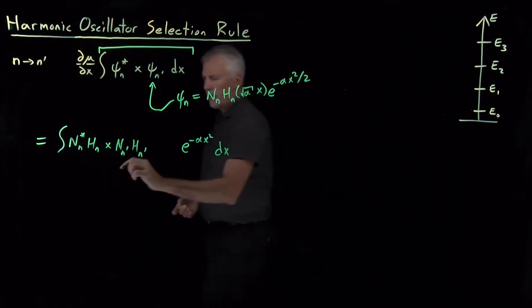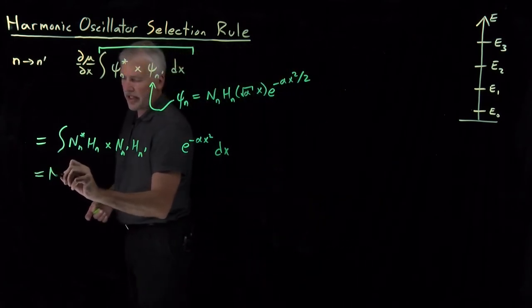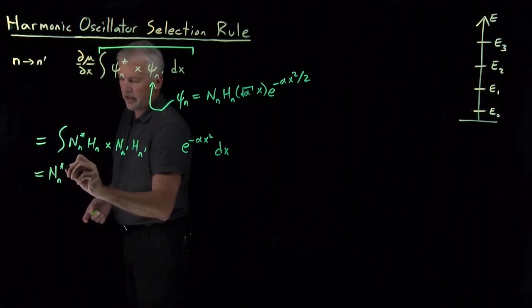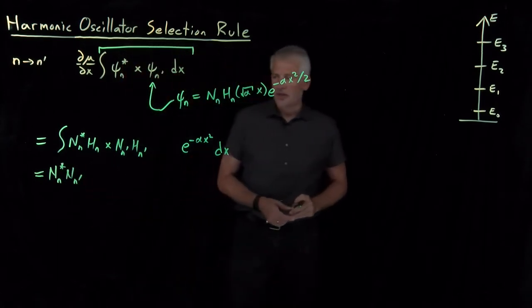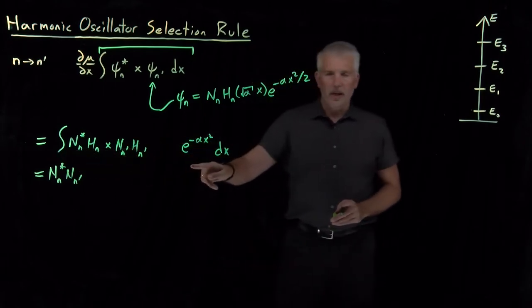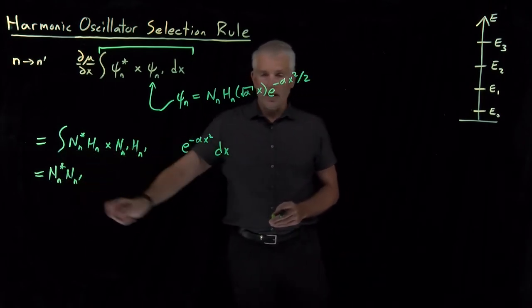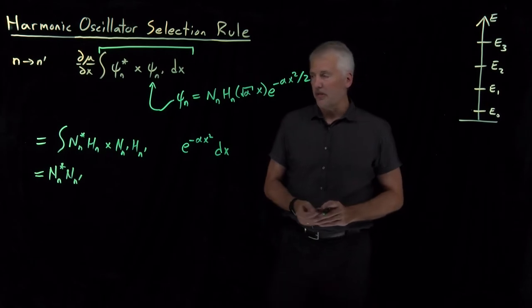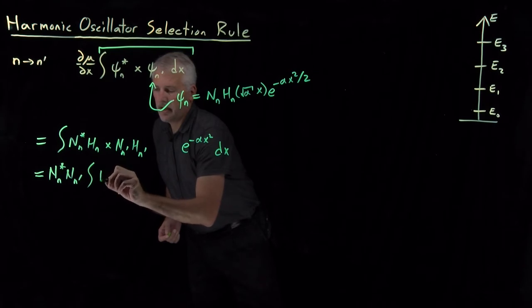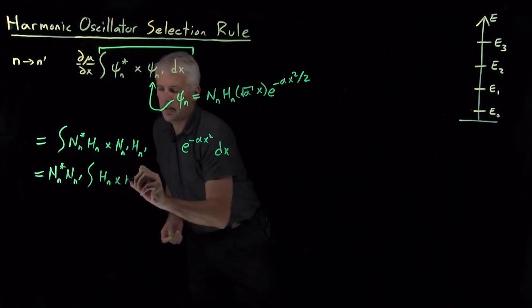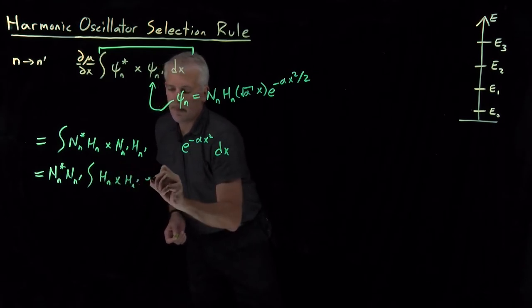Some of those are constants we can pull out of the integral. The constants N_n, I'm not particularly interested in the values of those constants. All I want to know is whether this integral is going to work out to be 0. The constants themselves are not going to be 0, so they're not terribly interesting right now. The rest of the integral looks like H_n times x times H_n prime times a Gaussian.